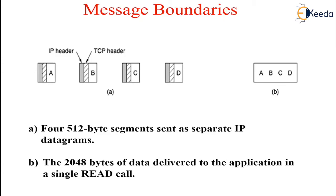When an application passes data to TCP, TCP may send it immediately or buffer it temporarily. However, sometimes the application really wants to send the data immediately. To push the data out, the application can use the push flag, which tells TCP not to delay the transmission.